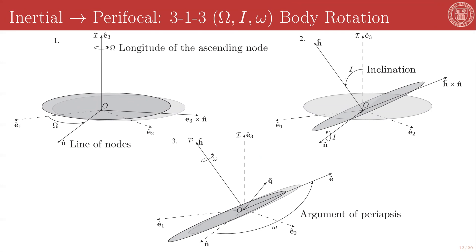And finally, we take a third lowercase omega rotation about the angular momentum direction, and that rotates the line of nodes into the eccentricity vector direction. And we have our Q hat direction completing the vector triad.